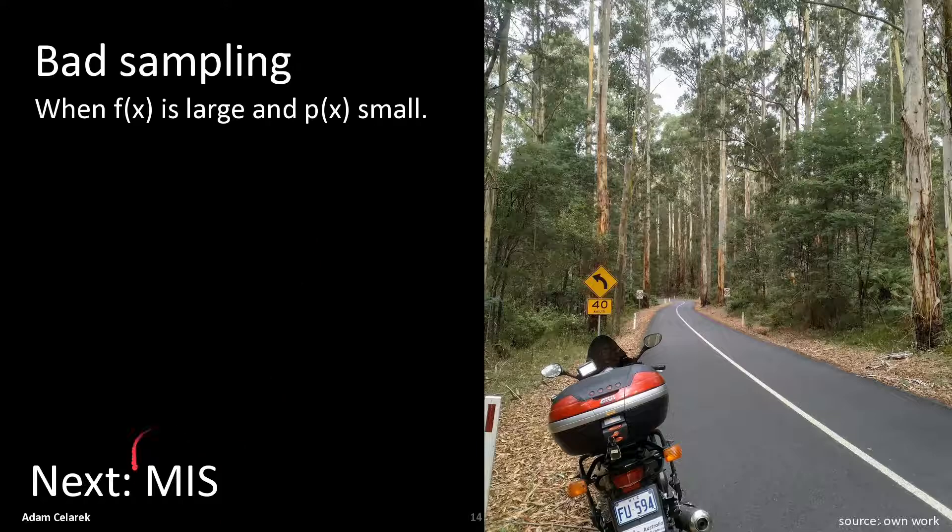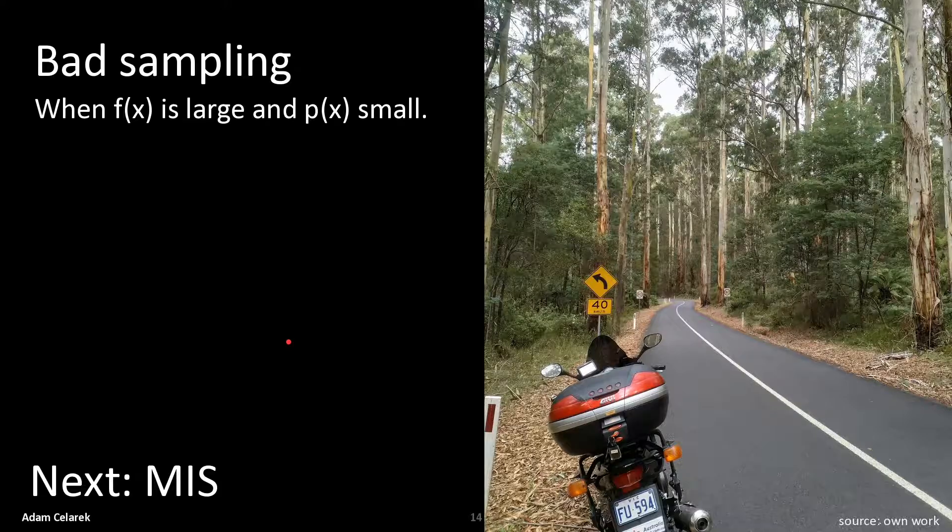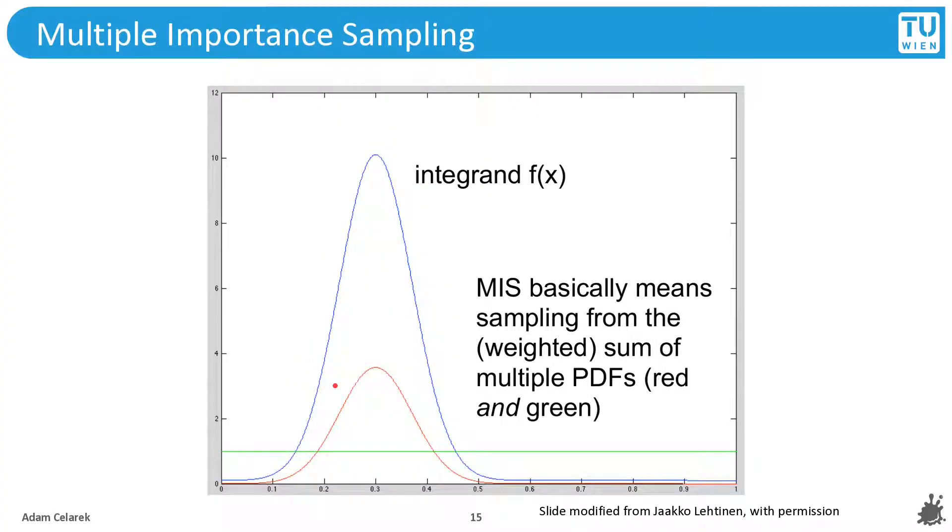So bad sampling is when f is large or at least significant and the probability of a certain sample is very low. Next we will go to MIS. So this is the strategy or the method to reduce this type of problem.